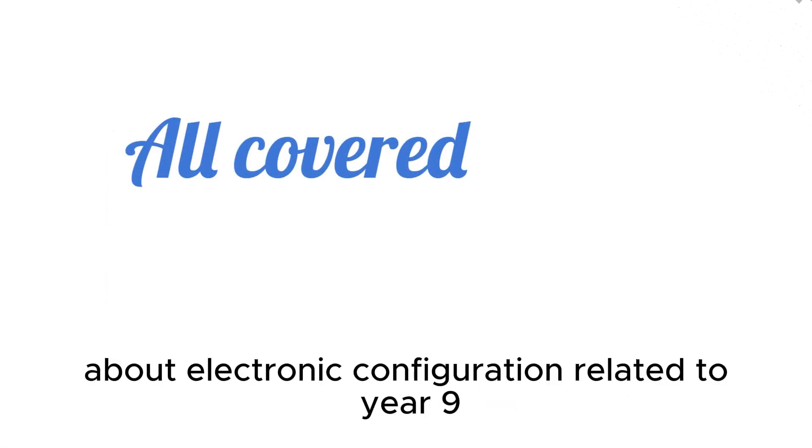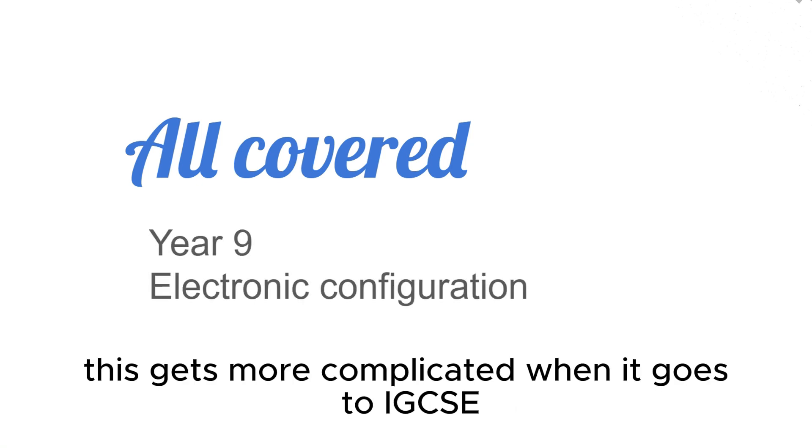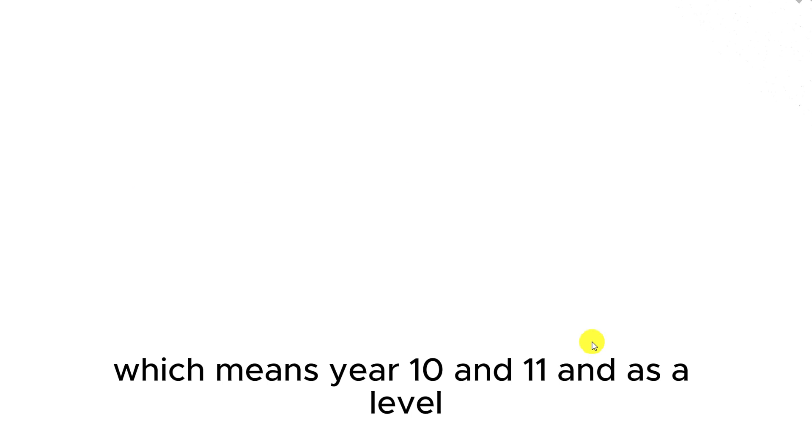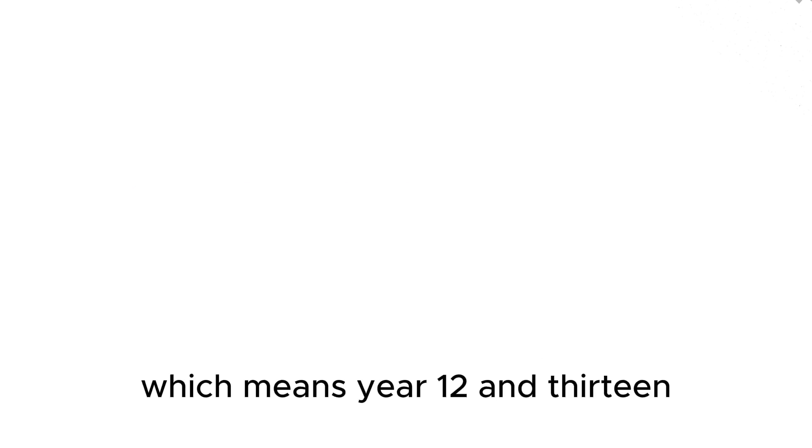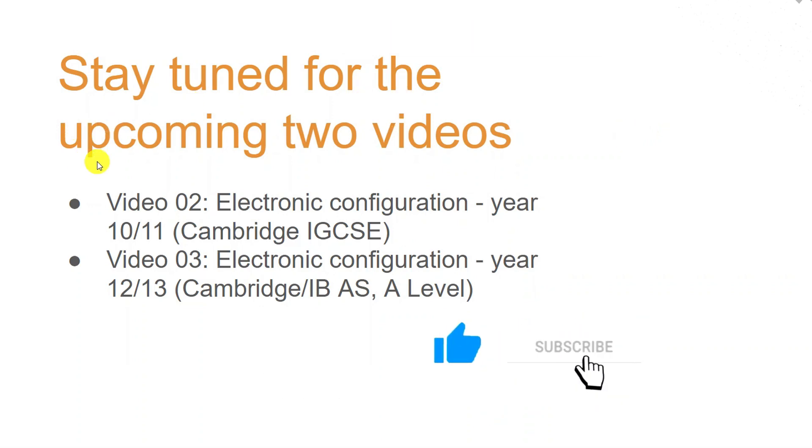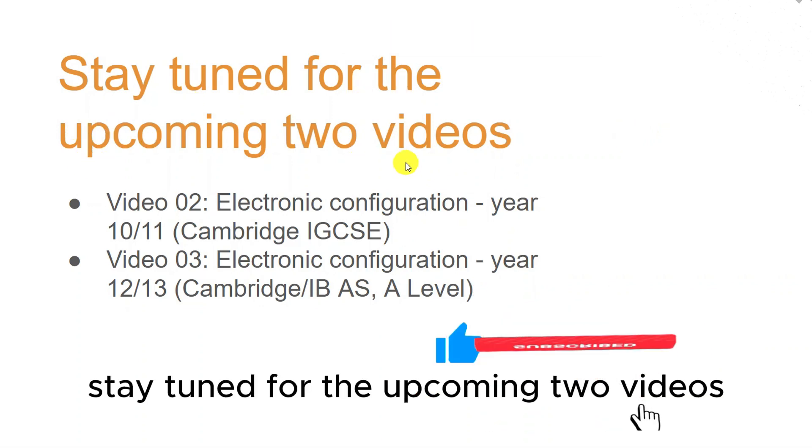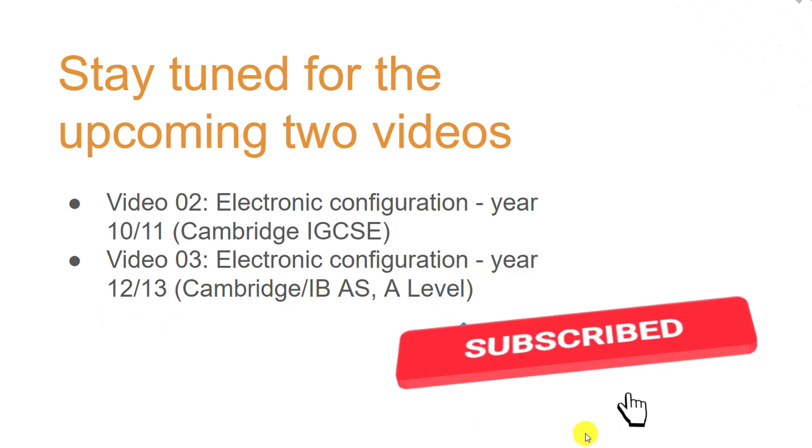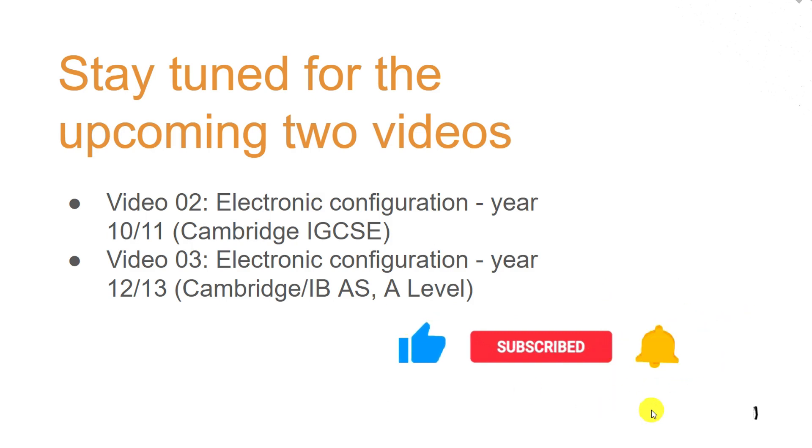So that's it about electronic configuration related to year 9. However, this gets more complicated when it goes to IGCSE, which means year 10 and 11, and AS level, which means year 12 and 13. That is the end of this video. Stay tuned for the upcoming two videos: Video 2, electronic configuration for year 10 and 11, and video 3, electronic configuration for year 12 and 13. That's it for this video and see you in the next video.